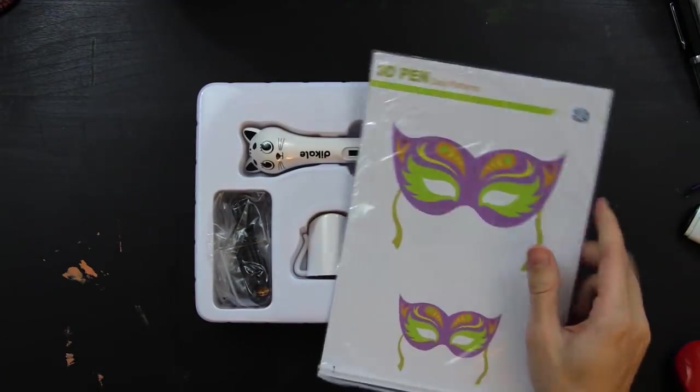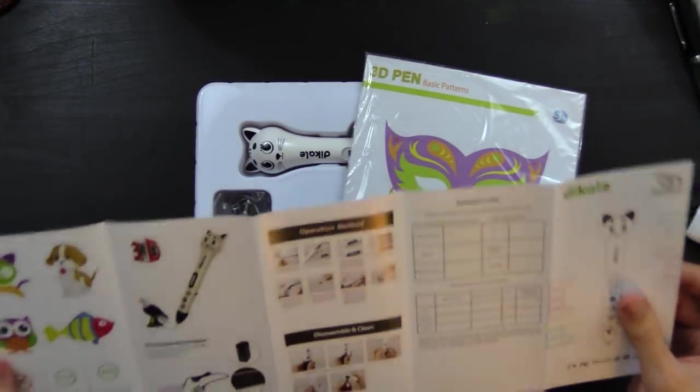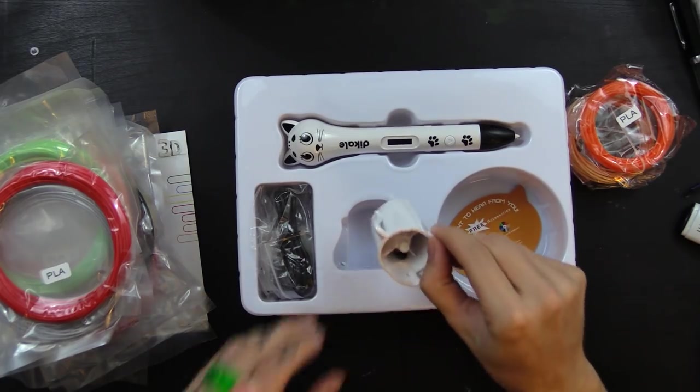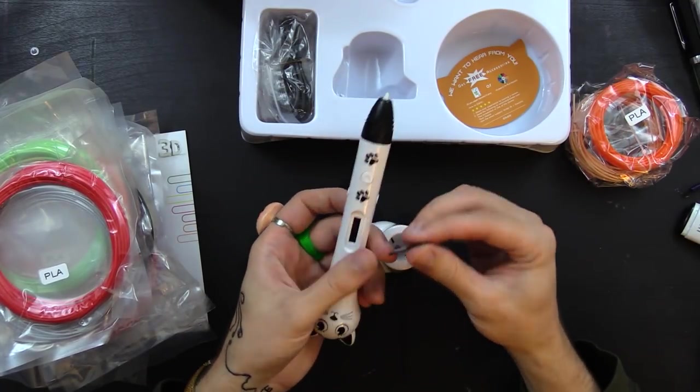This thing has little paw prints on it, cute little eyes, cute little whiskers, ears, and of course a cute little nose that you can boop if you want to.